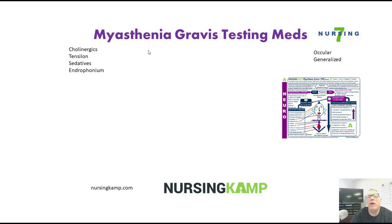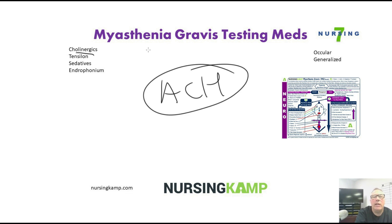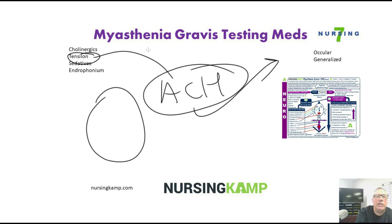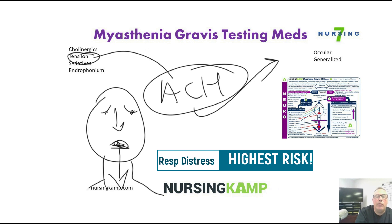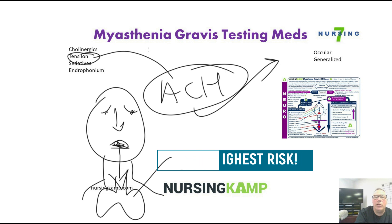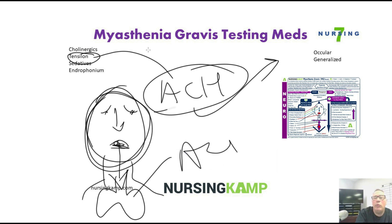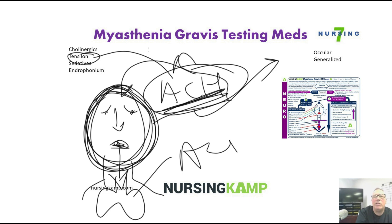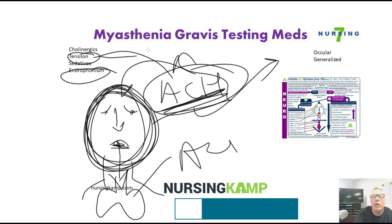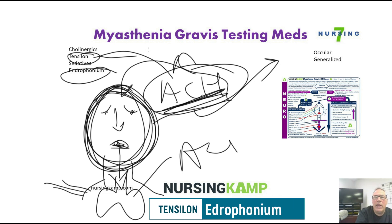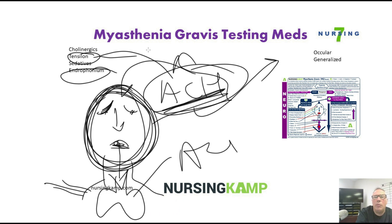When diagnosing Myasthenia Gravis, we know the problem is with acetylcholine, so we do what's called a tensilon test. The tensilon test basically gives them acetylcholine, which allows it to start working. Previously we said they get ptosis and descending weakness. The big issue is they start to have difficulty swallowing, and if it keeps progressing it goes down to the respiratory, which becomes an acute problem. So if we question Myasthenia Gravis, we're going to do the tensilon test — we administer this medication and it has a short half-life.